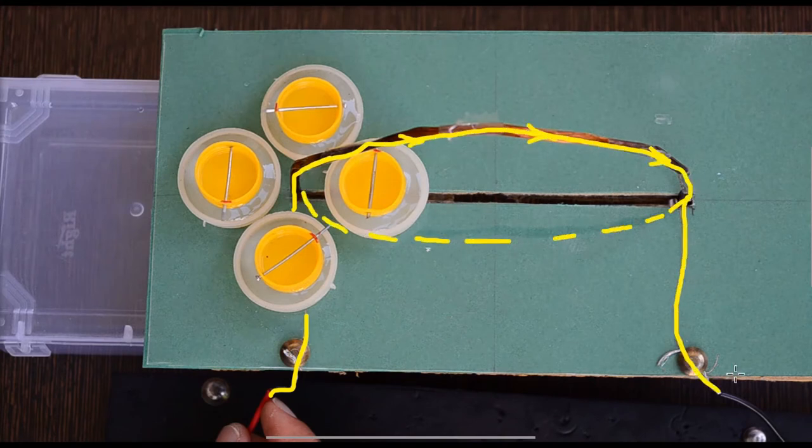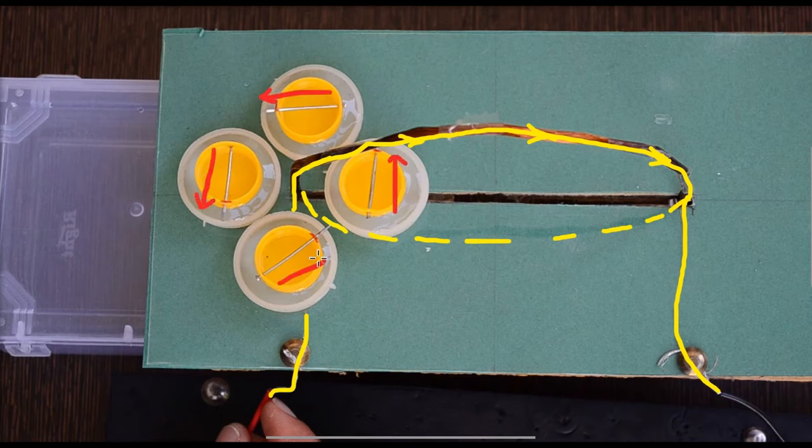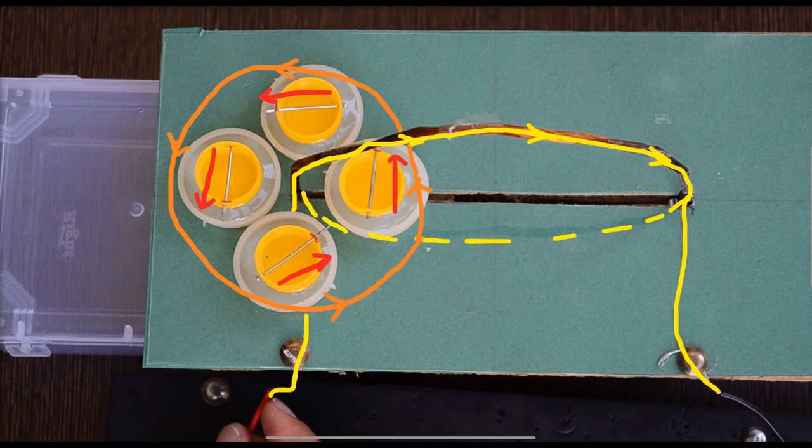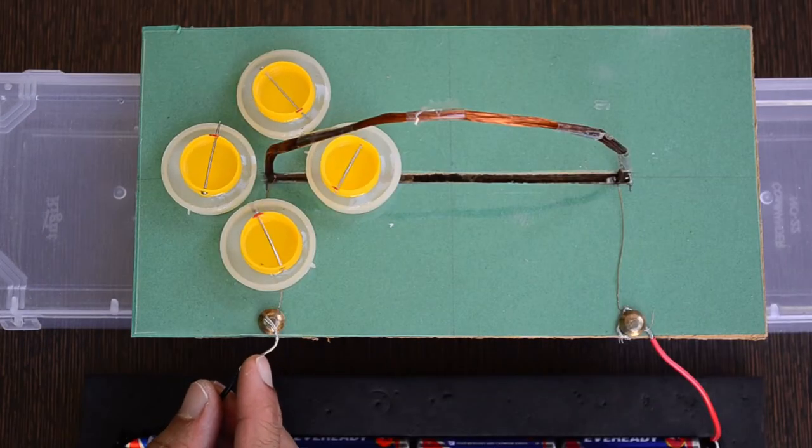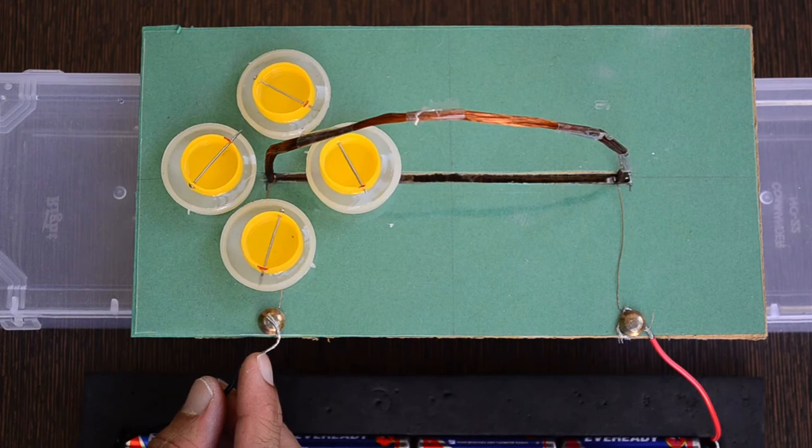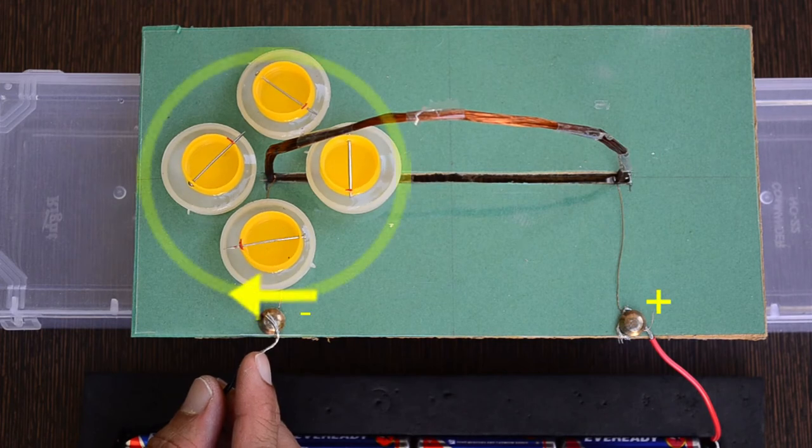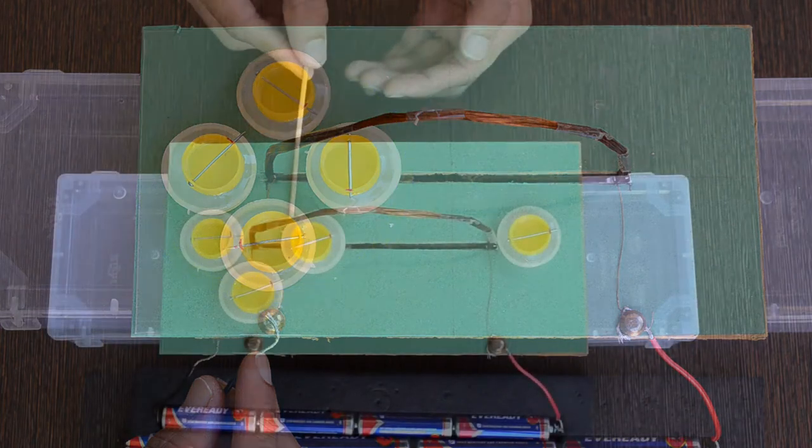Needles indicate the direction of magnetic field around the loop. It is as per right-hand thumb rule. Same steps can be followed at the other end as well. Reversing the direction of current reverses the direction of magnetic field as well.